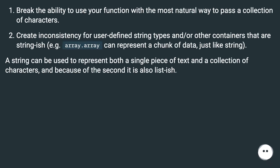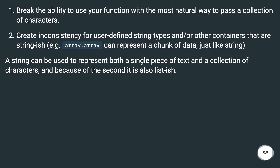Special-casing strings creates inconsistency for user-defined string types and other containers that are string-ish. For example, array.array can represent a chunk of data just like a string. A string can be used to represent both a single piece of text and a collection of characters, and because of the second, it is also list-ish.